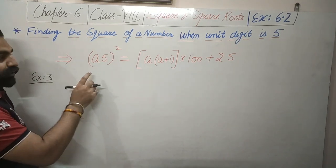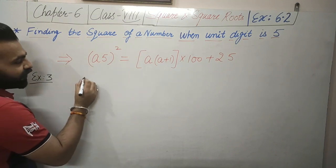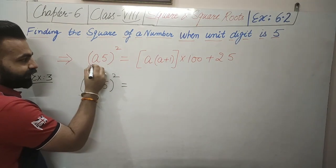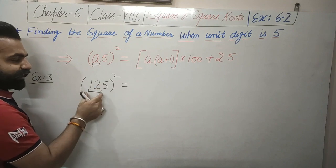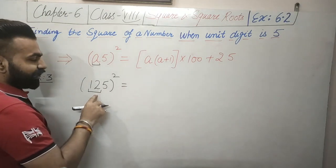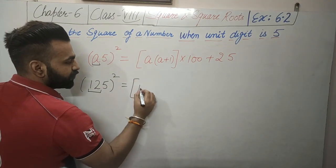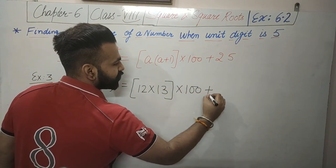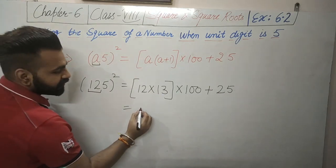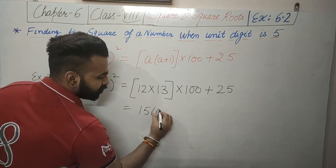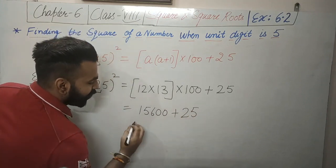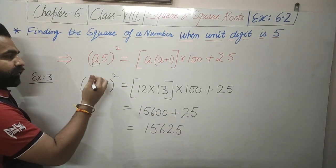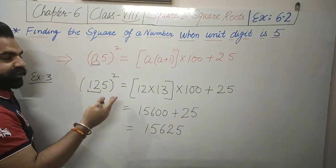Example number 3: we will take a value of a with 2 digits. For example, to calculate 125 squared — if we compare 125 to a5, then a is equal to 12, since all digits other than 5 are taken as a. We put the value a = 12 in the right-hand side: 12 into (12 + 1) equals 12 into 13, which is 156. So 125 squared equals 15625. In this way, a can be a single digit, double digit, triple digit, and so on.